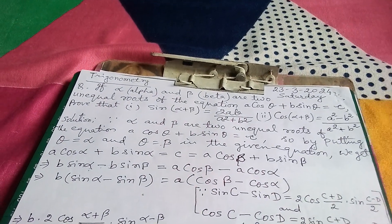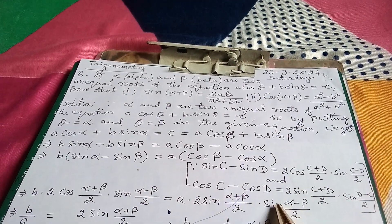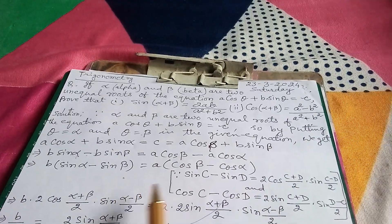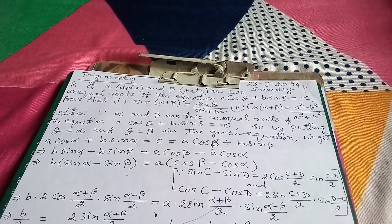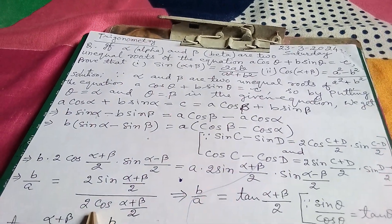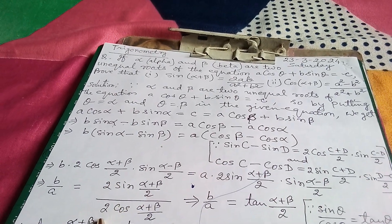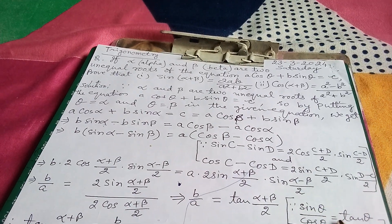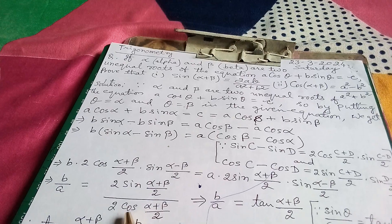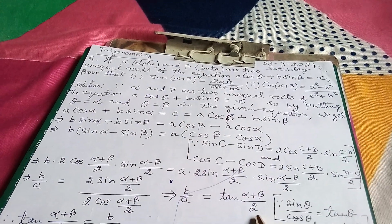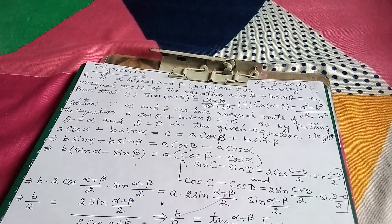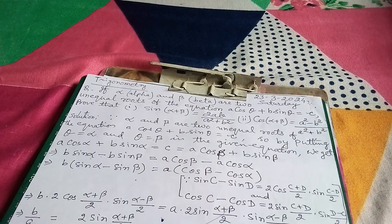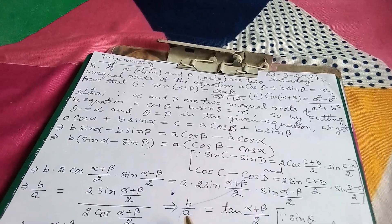Now, bringing a to the left side gives b/a, and sin((α−β)/2) appears on both sides and cancels. Since alpha and beta are two unequal roots, α ≠ β, so this cancellation is valid. We are left with: 2·cos((α+β)/2) on the right side, giving sin((α+β)/2) / cos((α+β)/2) = tan((α+β)/2) = b/a.